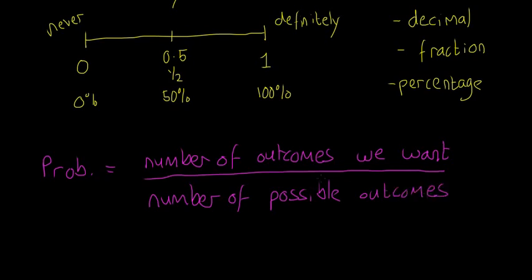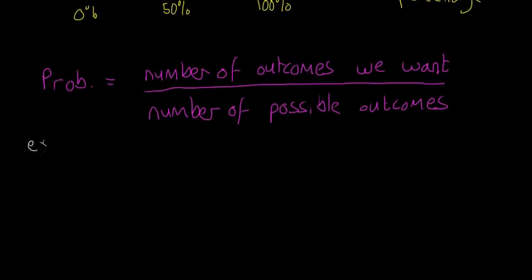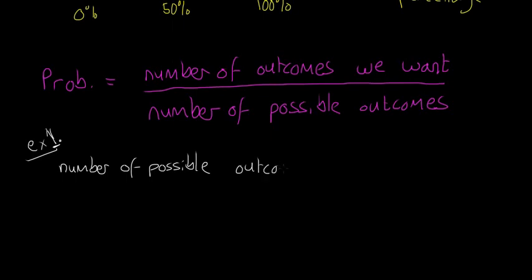This might not make that much sense right now, but once we do some examples you'll see this formula is actually quite easy. We're going to look at two examples in this video. Example one — we'll start nice and easy with a coin toss. When you're flipping a coin, the number of possible outcomes is two: heads or tails.